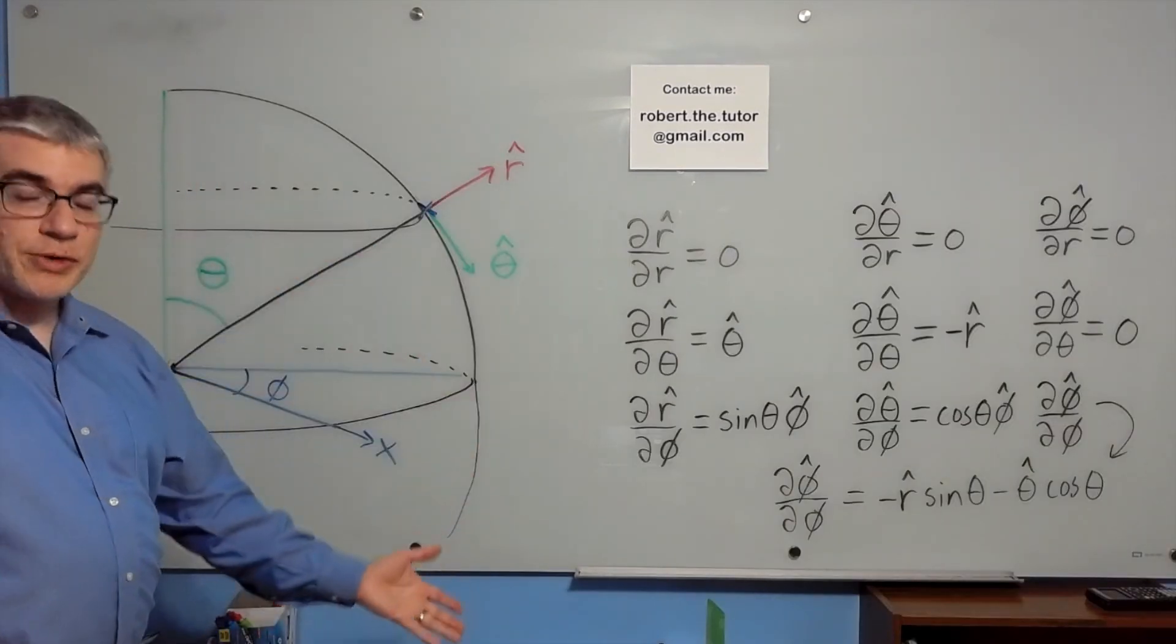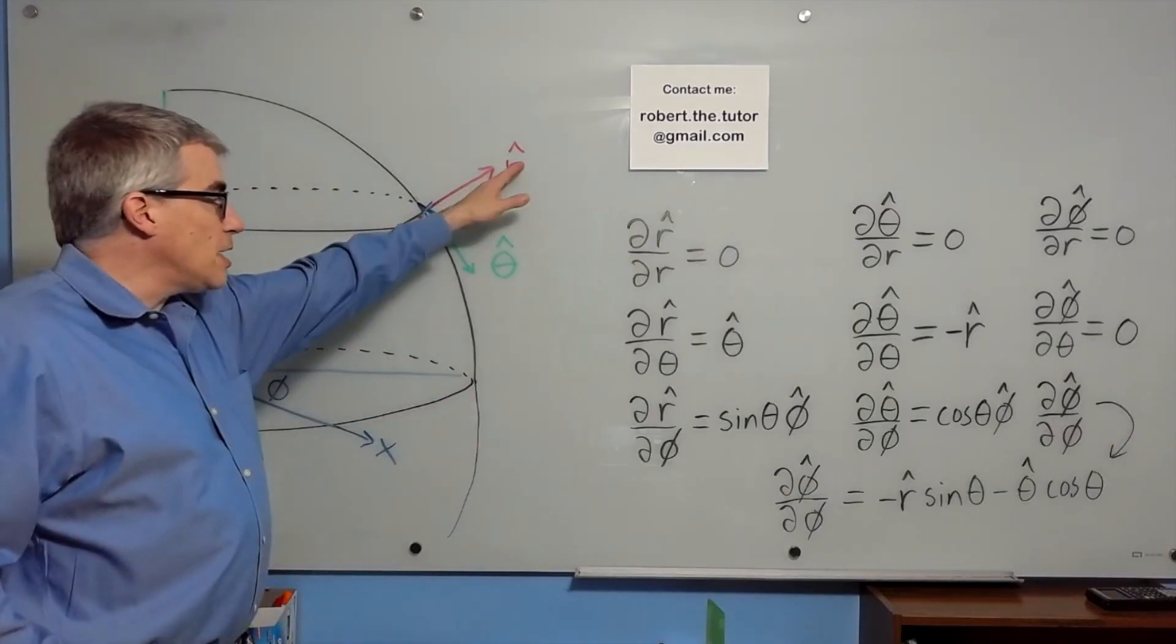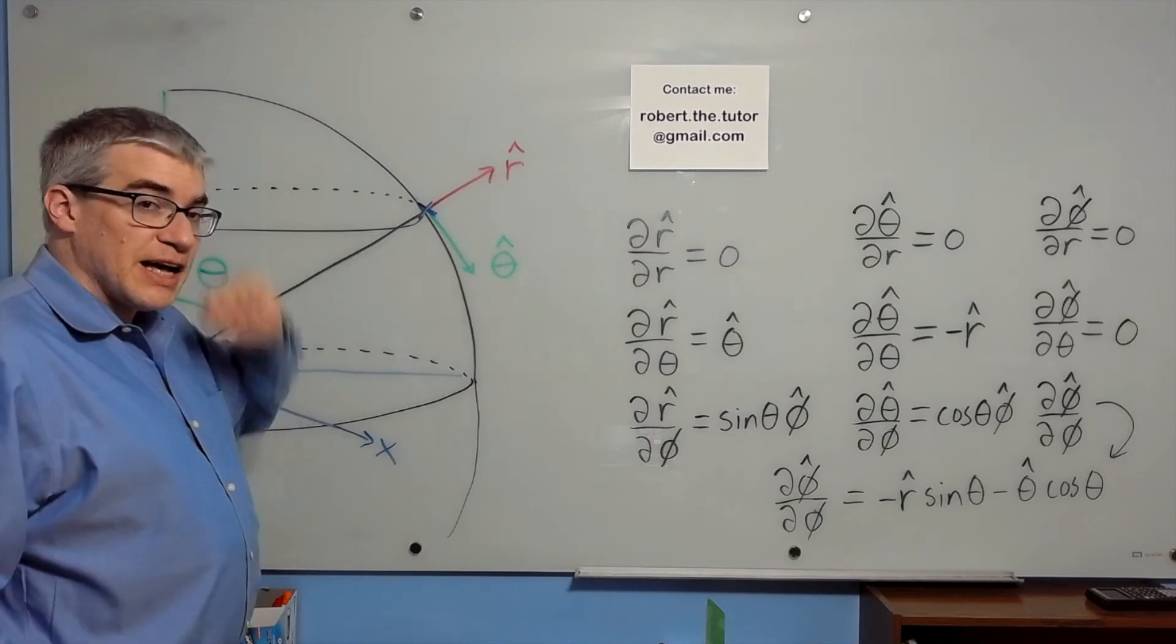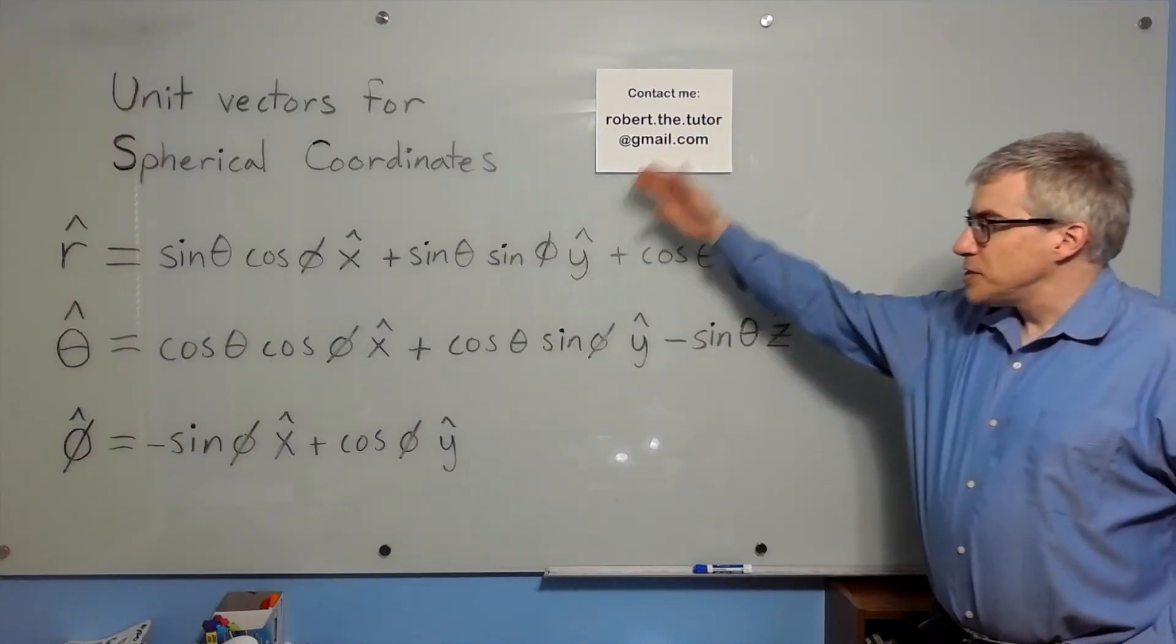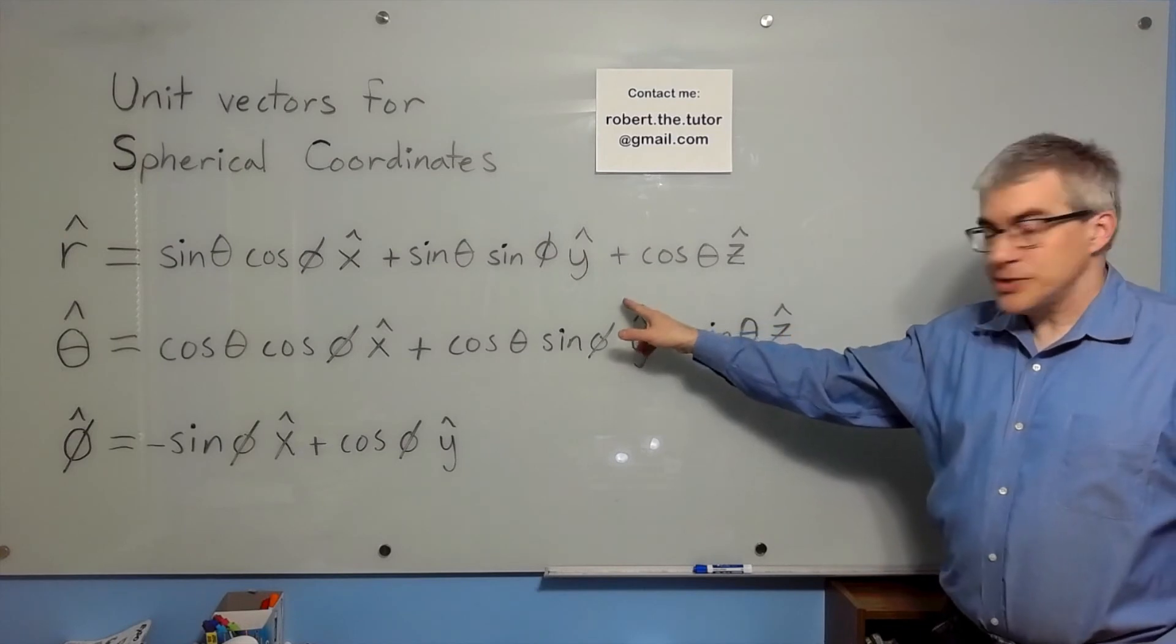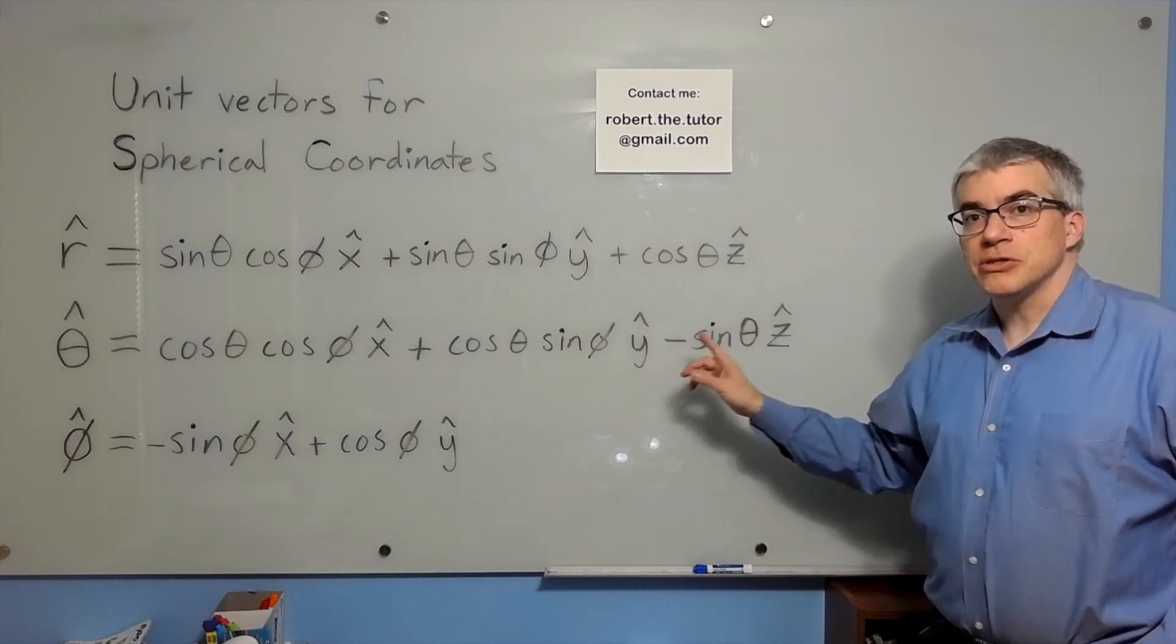In spherical coordinates, we have r-hat, theta-hat, and phi-hat. For reference, here are the unit vectors for spherical coordinates written out in Cartesian components.